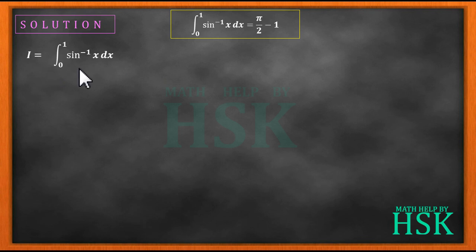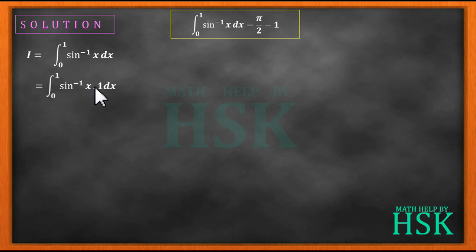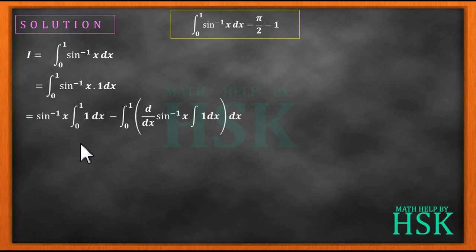I take this definite integral and assume it is equal to I. I can integrate this function directly by applying the formula of integration by parts, assuming the second function as equal to 1, because I cannot integrate sine inverse x directly, but I can definitely differentiate sine inverse x.